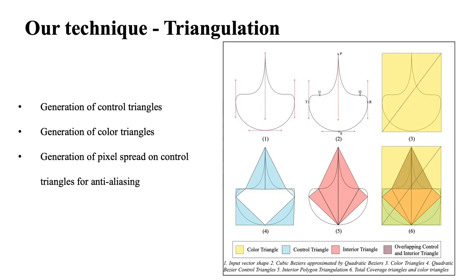Next, we create control triangles and expand them to avoid under-coverage. The interior and control triangles together constitute the coverage triangles. Then we create color triangles. These are simply the two triangles created by splitting the bounding box along the diagonal. The collection of all these triangles are passed on to the GPU render phase.